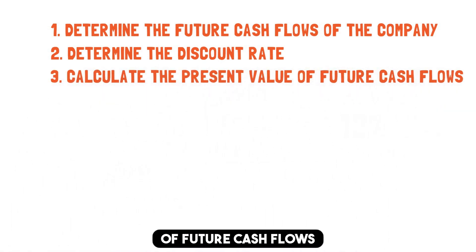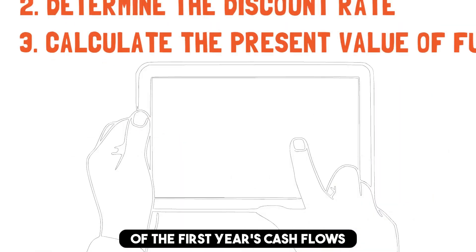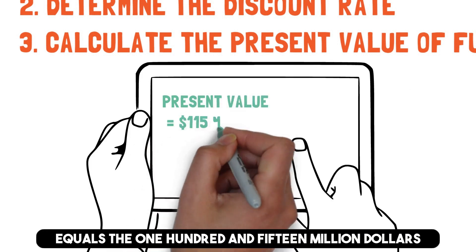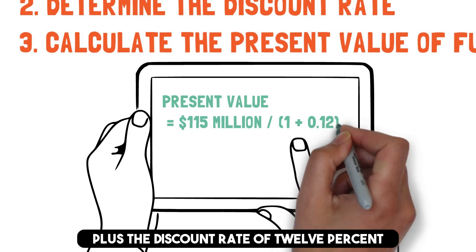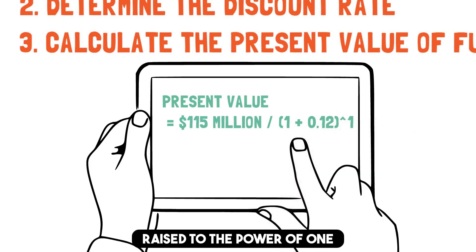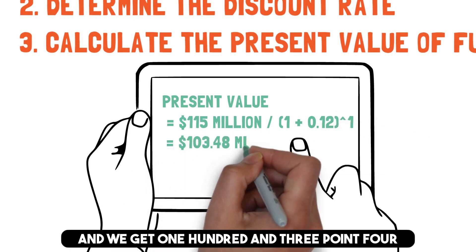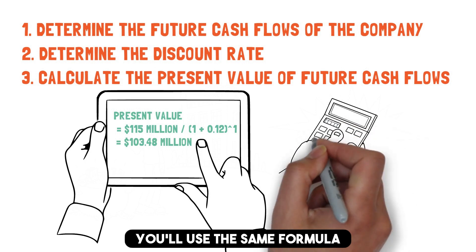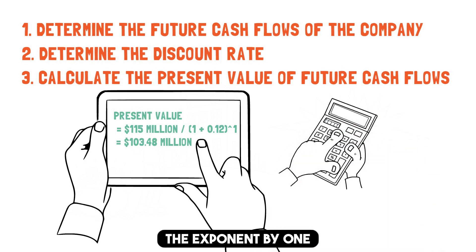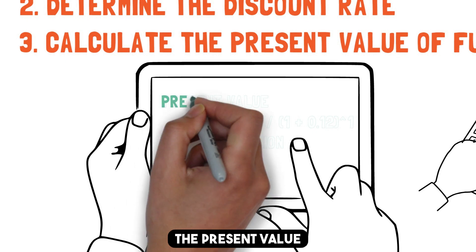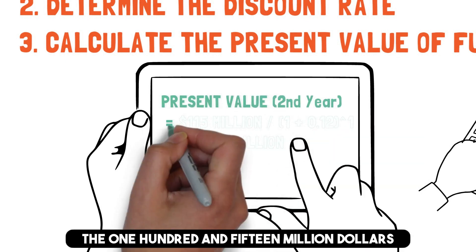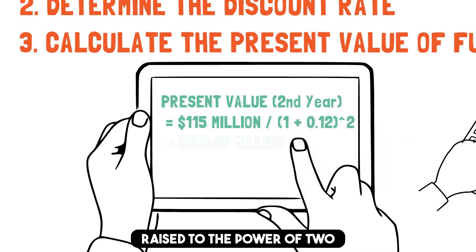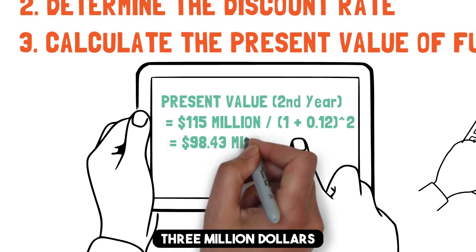Third, calculate the present value of future cash flows. To calculate the present value of the first year's cash flows, we use the formula: the present value equals $115 million divided by (1 plus the discount rate of 12%, or 0.12) raised to the power of 1, and we get $103.48 million. To calculate the present value of the second year's cash flows, the present value equals $115 million divided by (1 plus 0.12) raised to the power of 2, which equals $98.43 million.